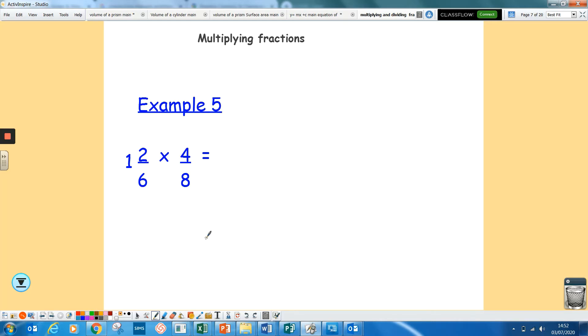If you have got the ones with the mixed numbers, then change them to top heavy like we did with the fractions. 1 times 6 is 6 plus your 2 is 8, so I've got 8 over 6 times by 4/8. Times the tops and the bottoms. Now 32 over 48, hopefully that should be simple enough.